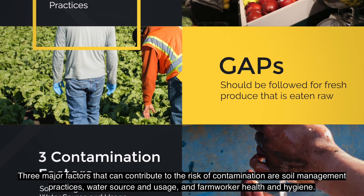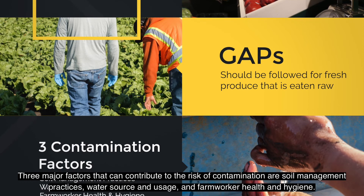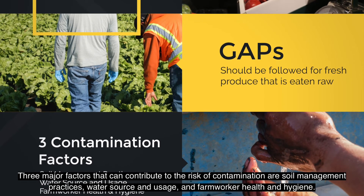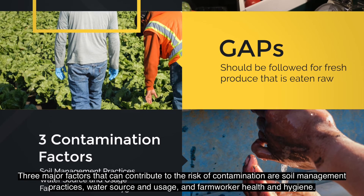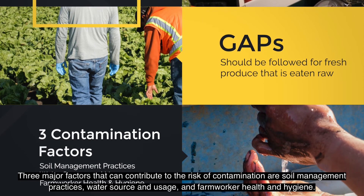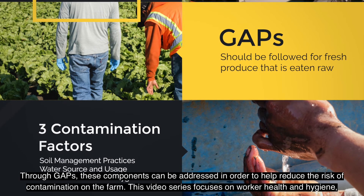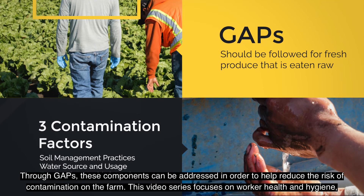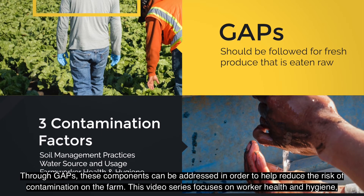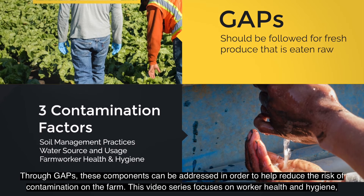Three major factors that can contribute to the risk of contamination are soil management practices, water source and usage, and farm worker health and hygiene. Through GAPs, these components can be addressed in order to help reduce the risk of contamination on the farm.